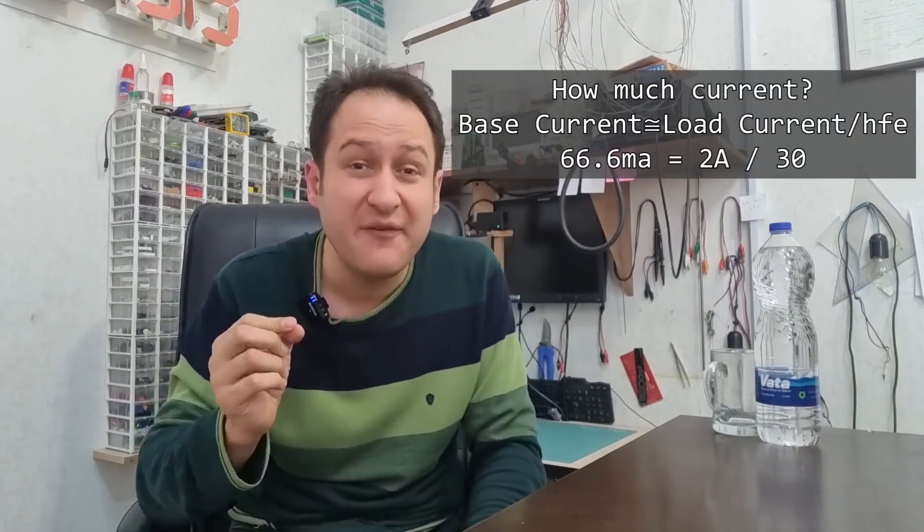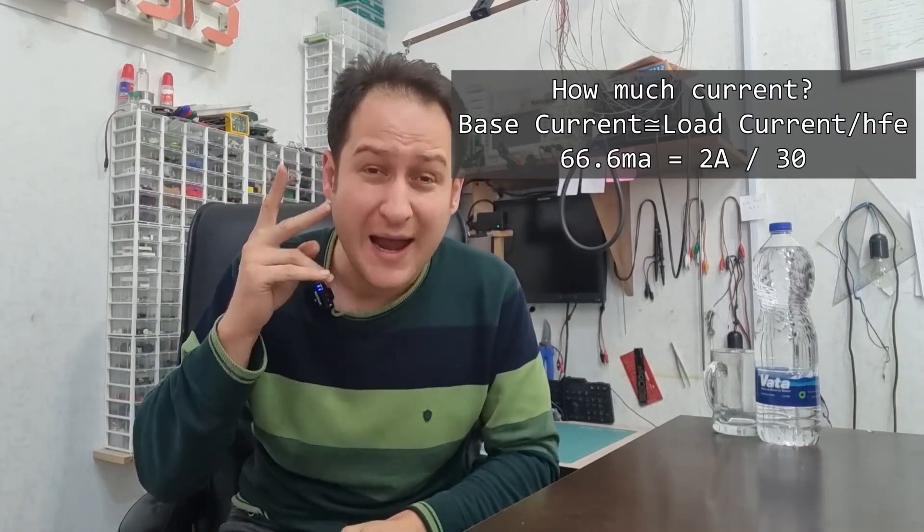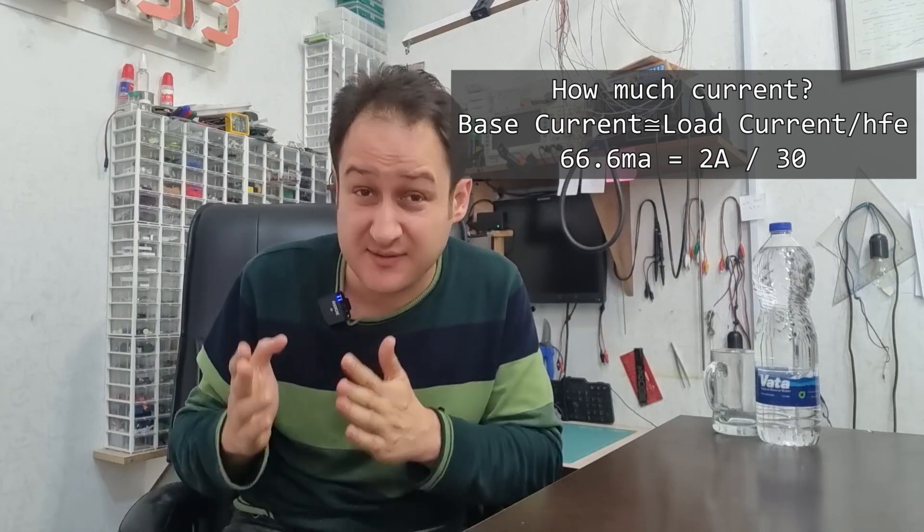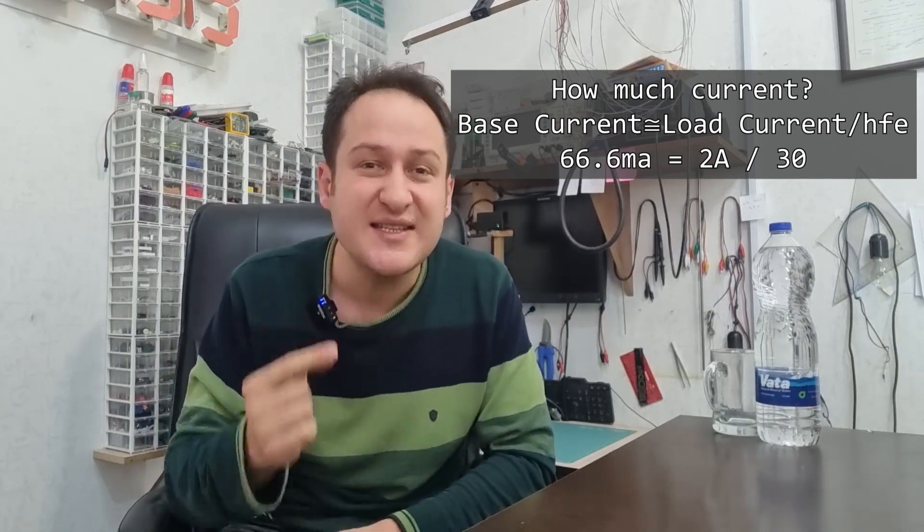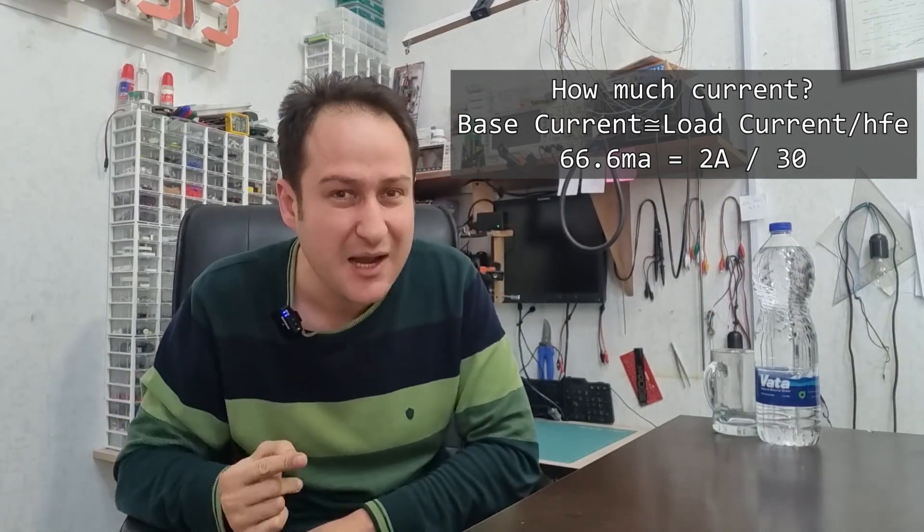If you look better at the datasheet of TIP41 transistor, there is another parameter named HFE. With a simple calculation, you can find out that if you draw 2 amperes on the collector pin of this transistor, you have to provide 66.6 milliamps to its base pin. And unfortunately,